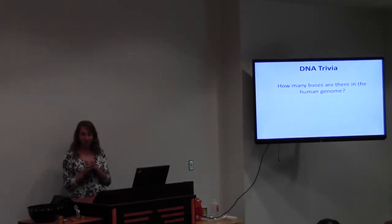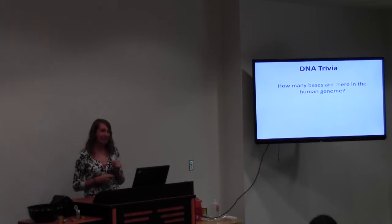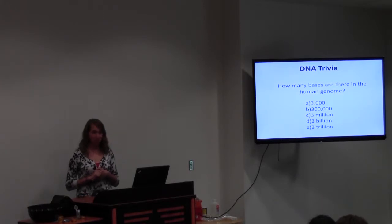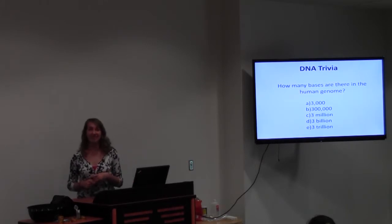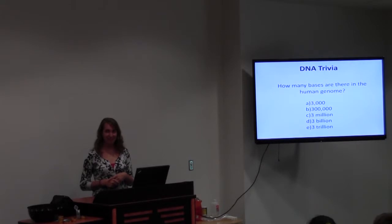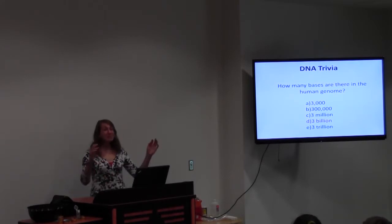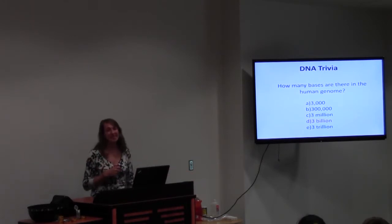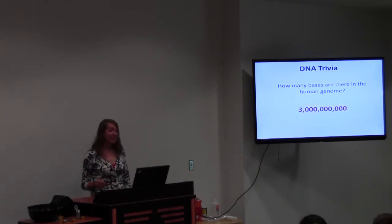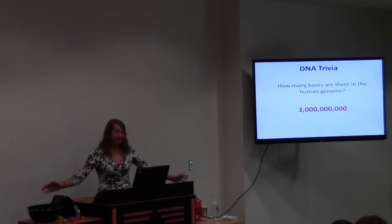I have a little trivia for you — shout out whatever answer you think is correct. How many bases do you think there are in the human genome? The choices are: three thousand, three hundred thousand, three million, three billion, or three trillion. The answer is three billion — which is still a really big number. If we write it out, it's all those A's, G's, T's, and C's — and there are three billion of them.